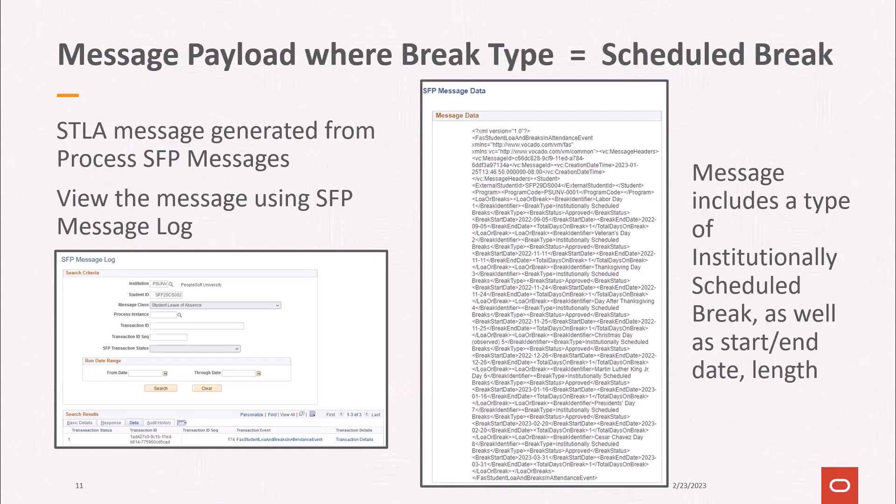The message will include all scheduled breaks that fall within the student's minimum term begin date and maximum term end date. In this example, the student is term activated in fall 2022, which began August 29th 2022, and spring 2023, which ends May 11th 2023. Leave of absence and schedule break data on SFP always reflects the data sent in the most recent STLA message.